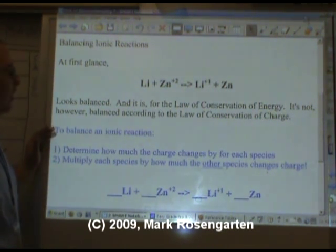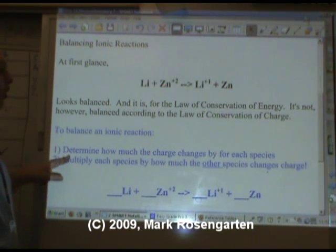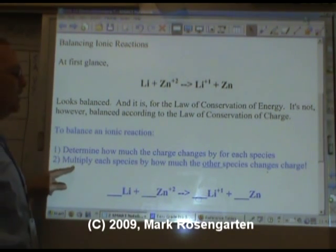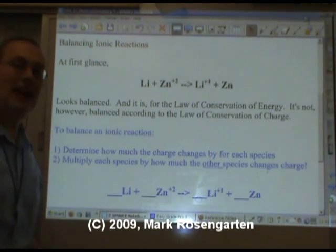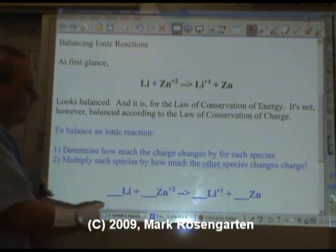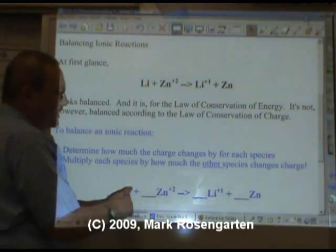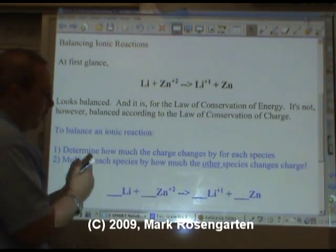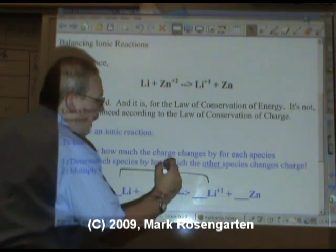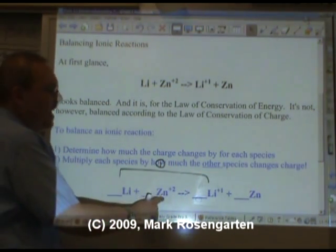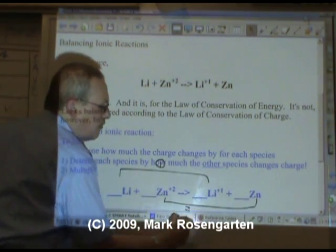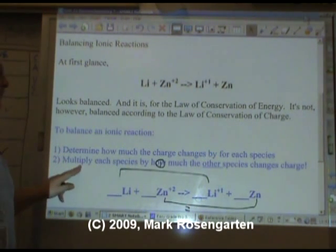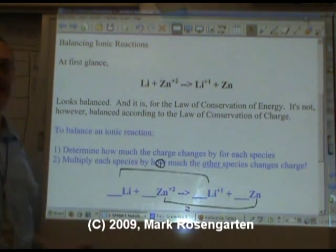To balance an ionic reaction, what you do is determine how much the charge changes by for each species, then multiply each species by how much the other species changes charge. This will balance out the charge. Lithium changes from zero to plus one. It changes charge by one. The zinc changes charge from plus two to zero. It changes by two.